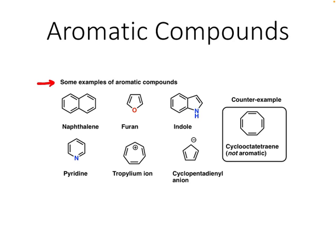You might be familiar with some of these, like pyridine — we've talked about pyridine in some of our reactions. We've talked about tetrahydrofuran before, and furan is a five-membered ring with an oxygen atom and a couple of pi bonds. And then we've got naphthalene and indole. Ions can also be considered aromatic compounds: the tropilium ion, which is positively charged, and the cyclopentadienyl anion.